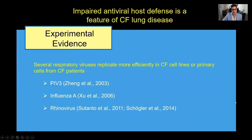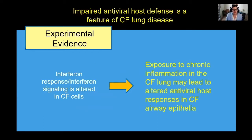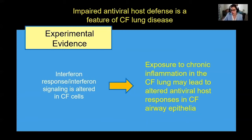More recently, some investigators have tried to look at this experimentally using CF cell lines or primary cells derived from CF patients. These studies suggest that respiratory viruses seem to replicate more efficiently in CF cells compared to non-CF cells — seen with multiple viruses, including parainfluenza virus 3, influenza, and rhinovirus. A common theme from these studies is that the interferon response seems to be dysregulated or altered in CF cells, contributing to this phenotype.